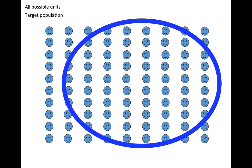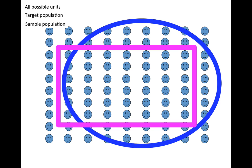So let's think about other ways we could gather information without attempting to collect information on every unit in the target population. The way to do that is to define a sample population.